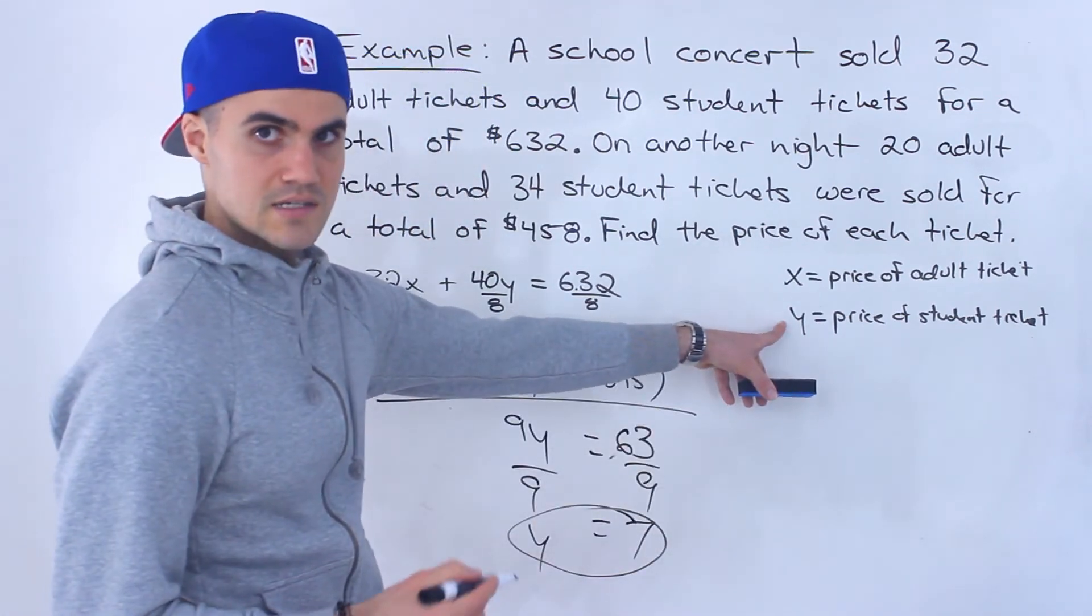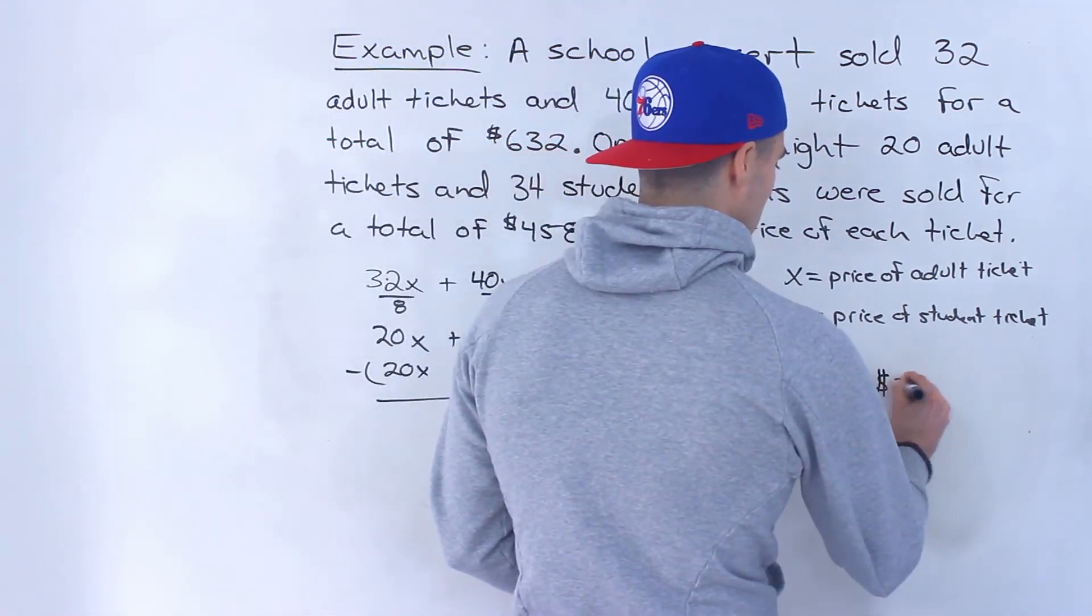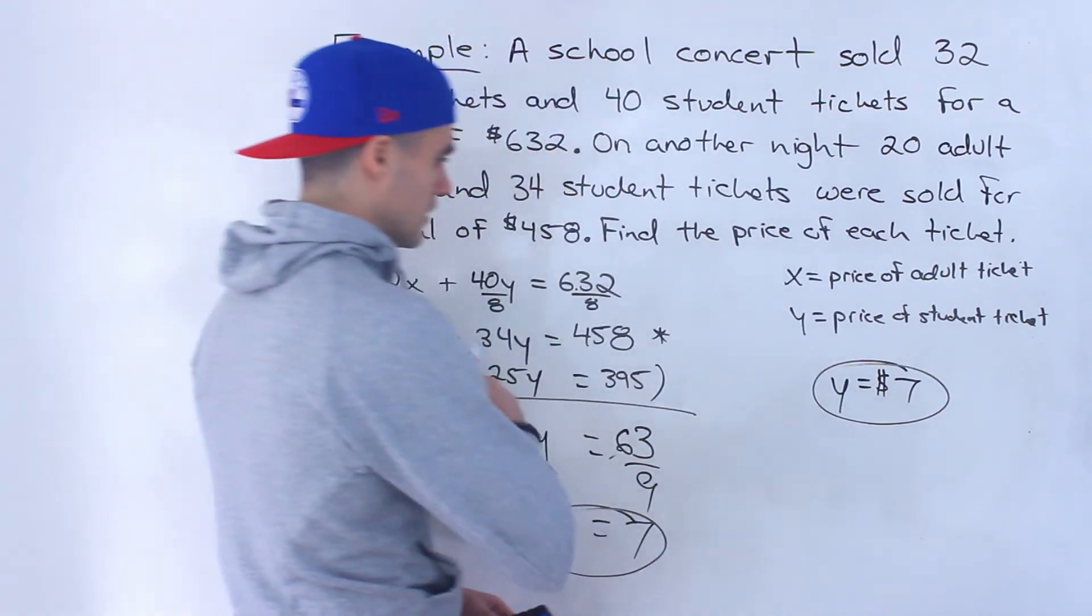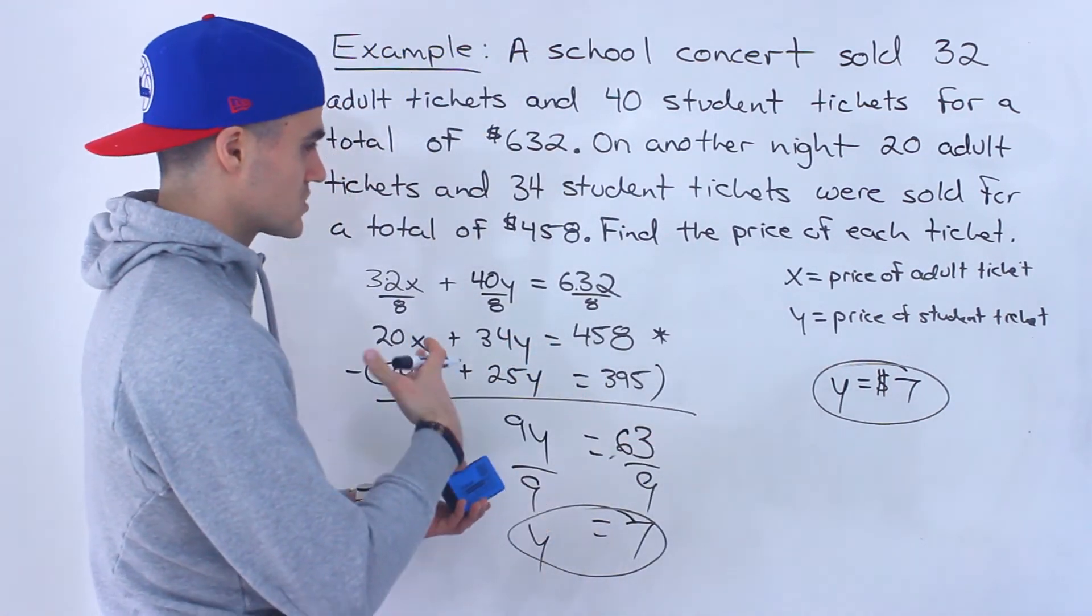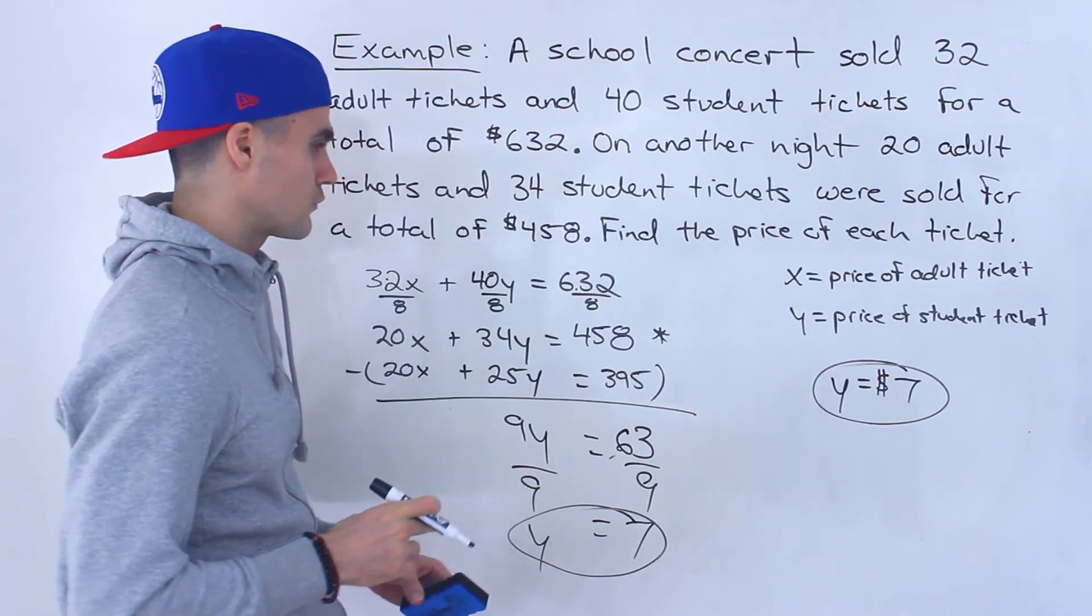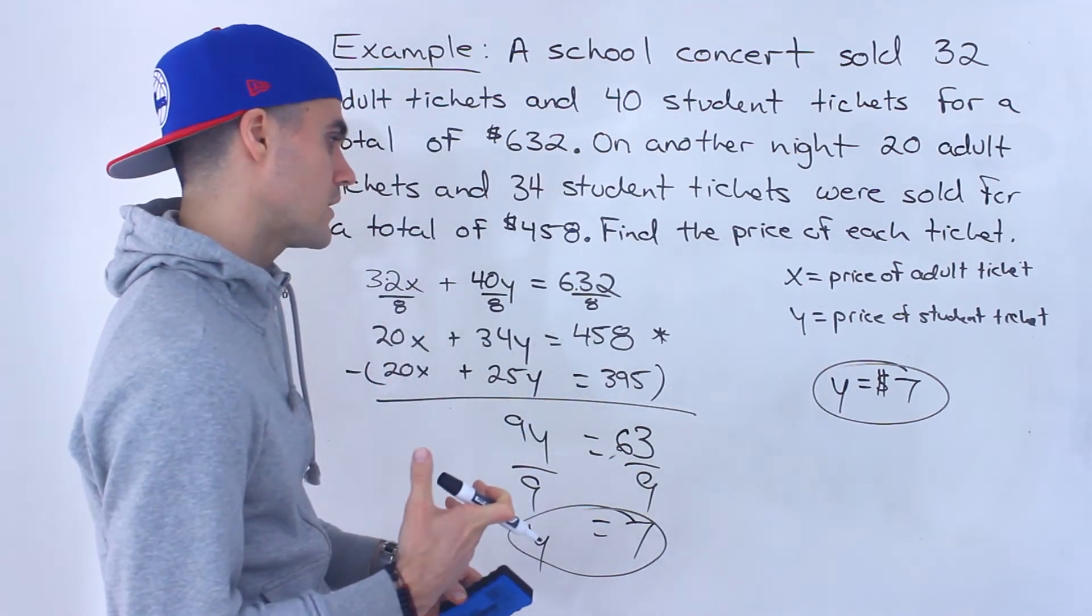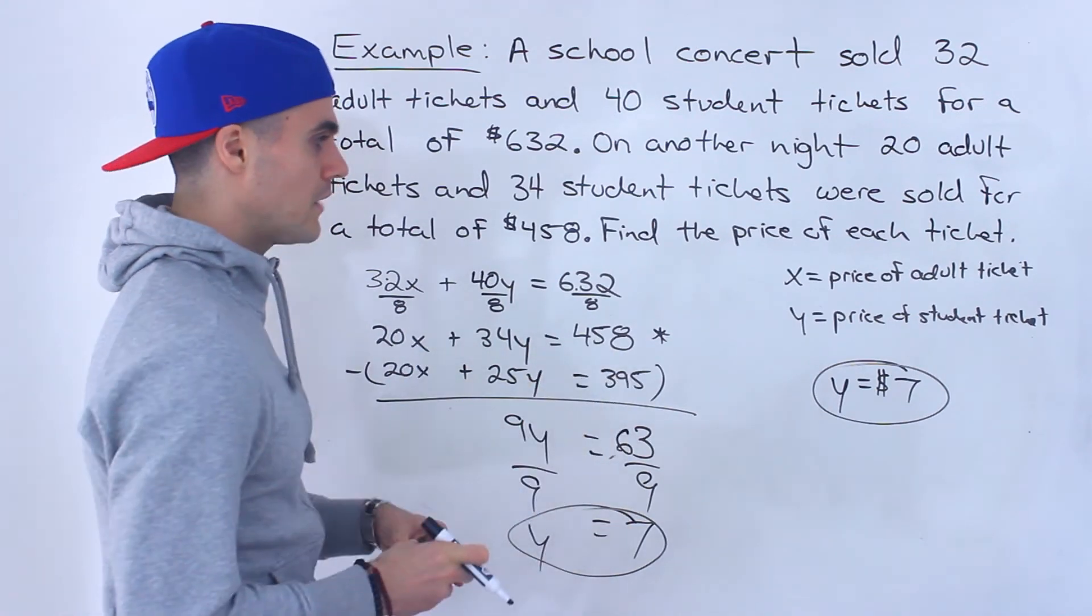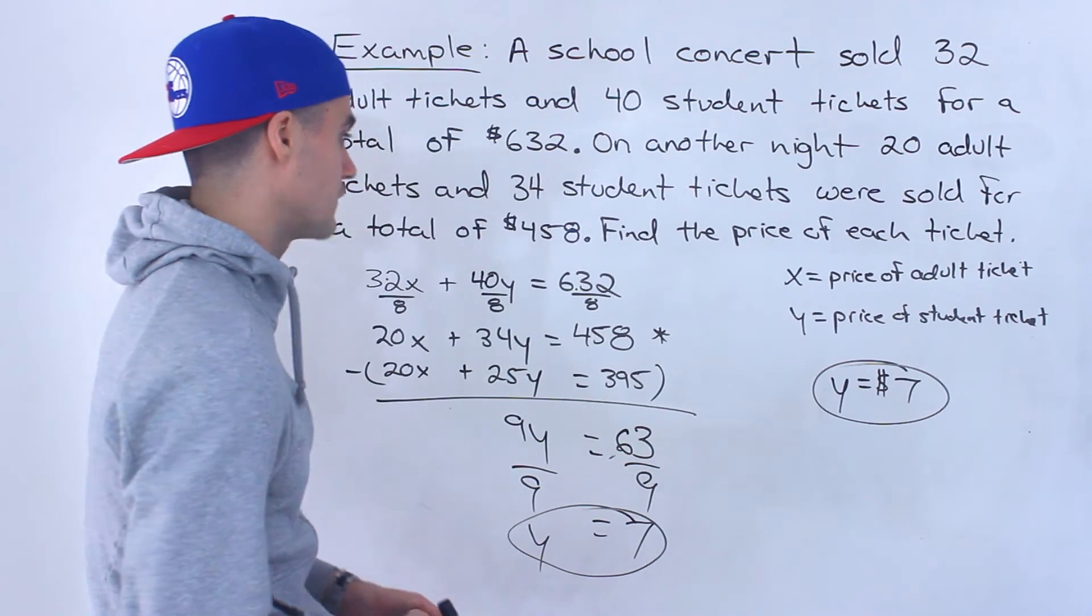So that's the price of a student ticket. Y is equal to $7. Now, you could have gone about this a totally different way. You could have maybe isolated for something. Doing substitution is going to be a little tougher with this. The numbers are going to get pretty big. The fractions you're going to work with are going to get pretty big. I did it one way, but whichever way you do it, just make sure that you're getting this Y value of 7.